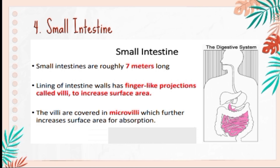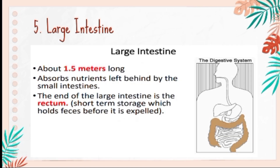Number 4 is the small intestine. Small intestines are roughly 7 meters long. The lining of the intestine walls has finger-like projections called villi to increase surface area. The villi are covered in microvilli, which further increases surface area for absorption.